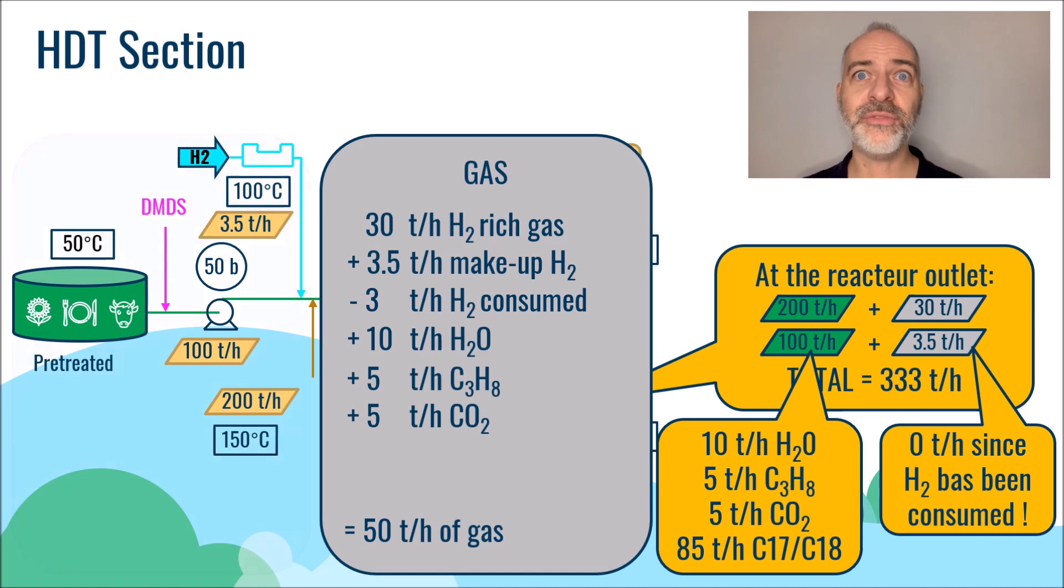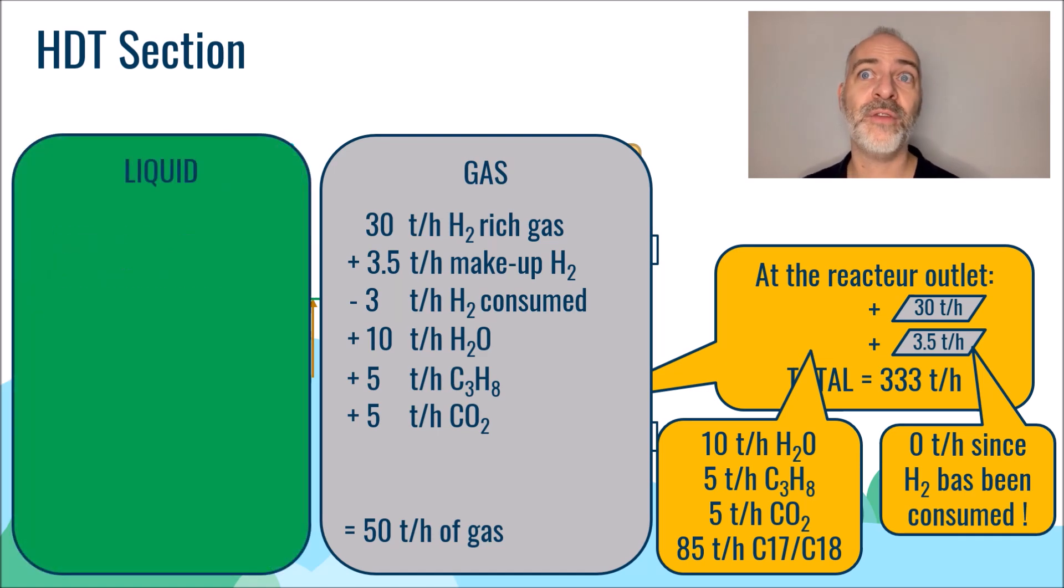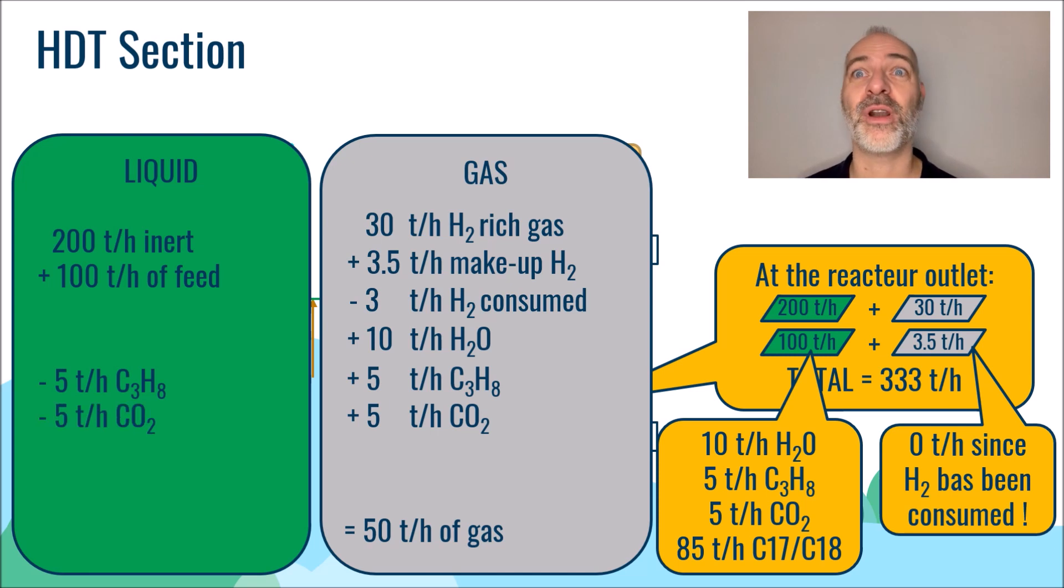In the liquid phase, there remains the 300 tons per hour that we had at the outlet of the reactor, minus 5 tons per hour of propane, minus 5 tons per hour of CO2, minus 10 tons per hour of water, but plus the 3 tons per hour of hydrogen that are now associated with the paraffins produced. So there remains 283 tons per hour of liquid.